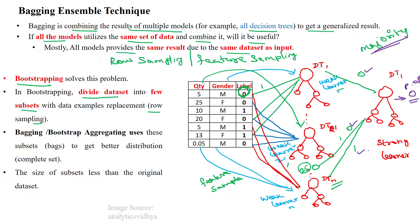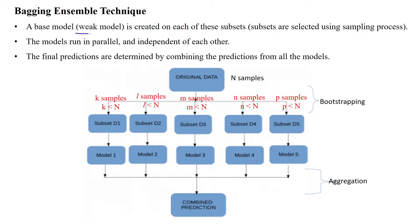So our accuracy is improving. Each one is called a bag, so we are bagging the outputs of weak learners — that is why it is called bagging. This is the bagging technique. The original data is split into different subsets using row sampling and feature sampling, and given to weak learner 1 and so on.